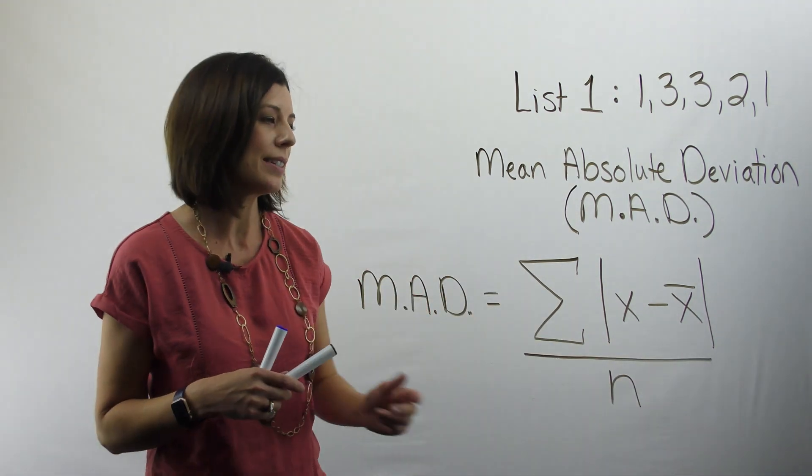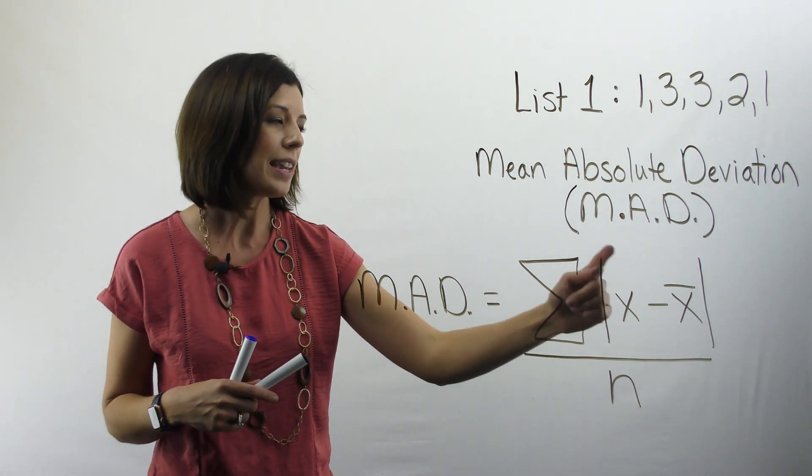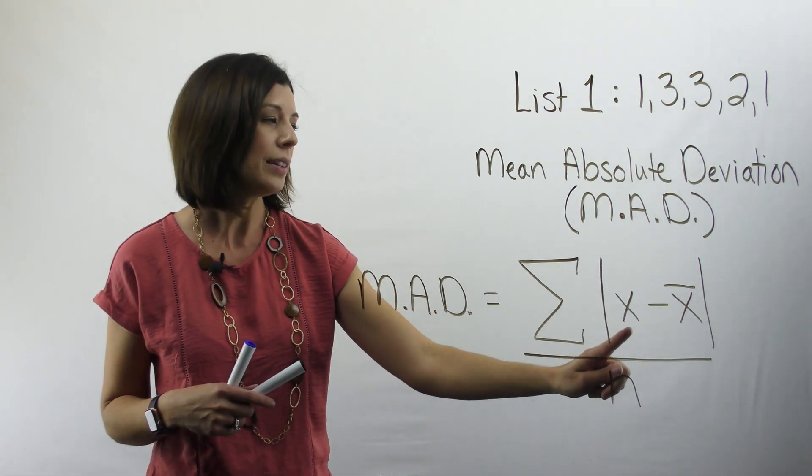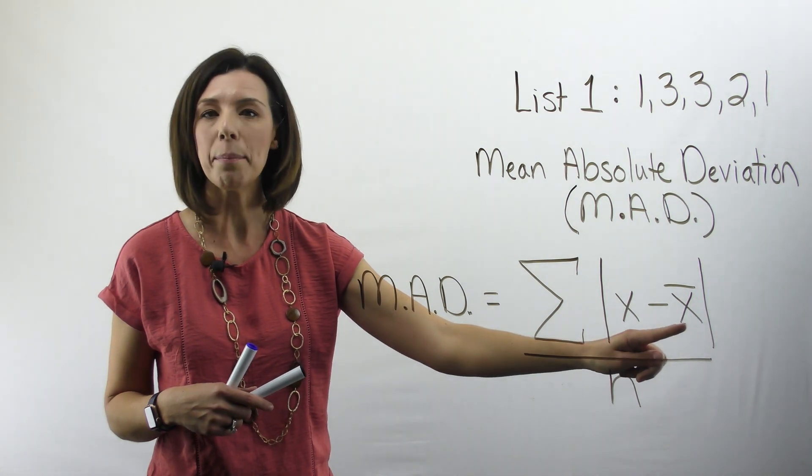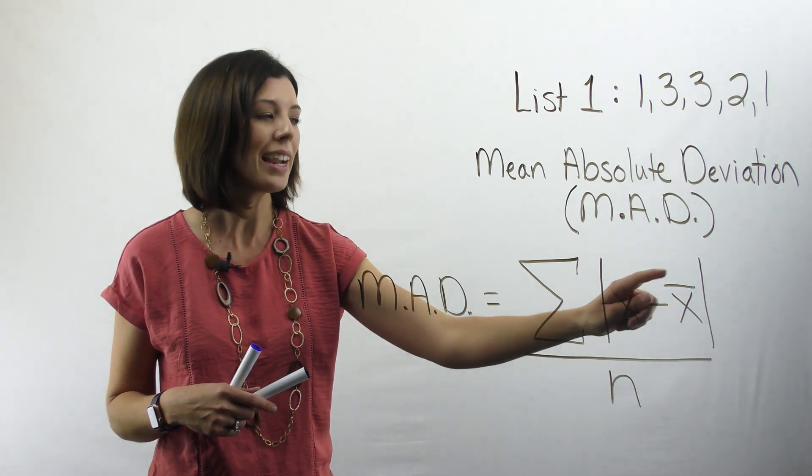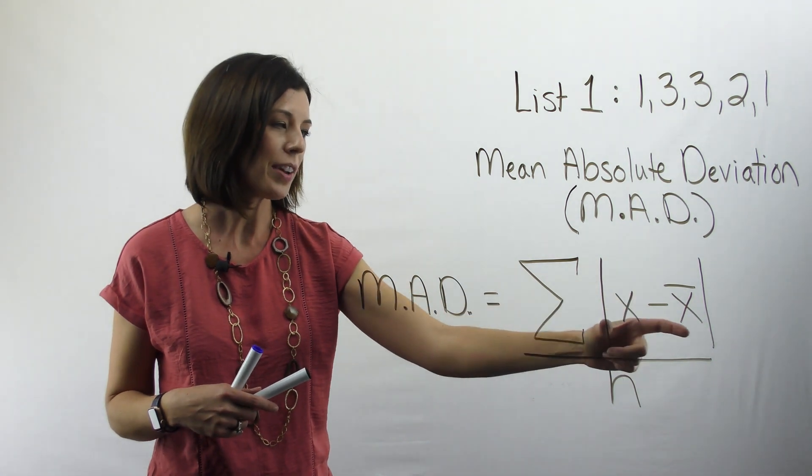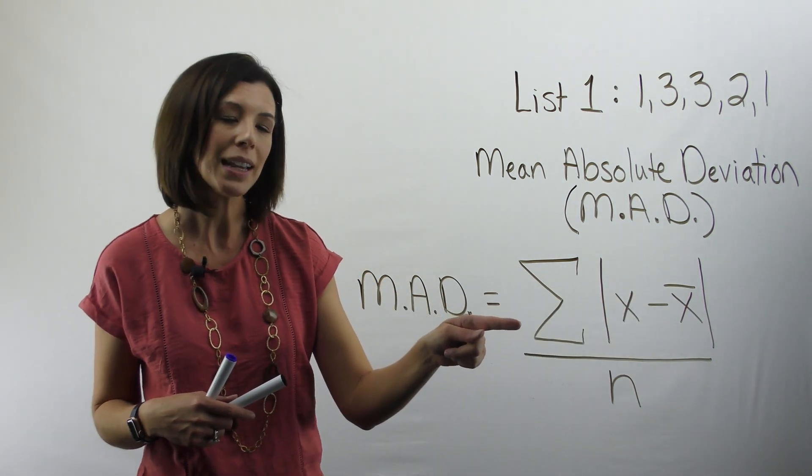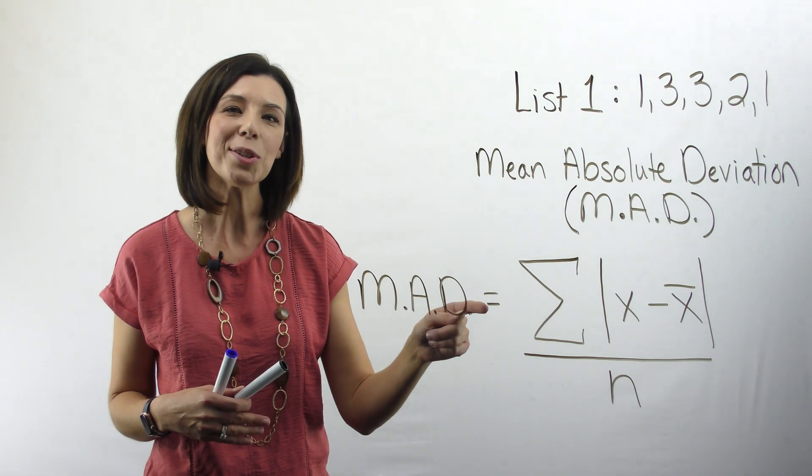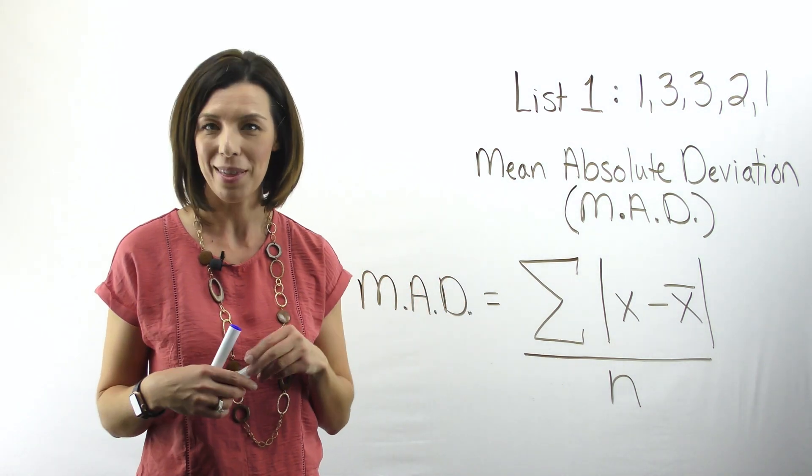What this tells me is I need to first start by taking the absolute value of each data point and subtracting out the sample mean. This is the symbol for sample mean in statistics. So I'm going to take the absolute value of that. Then I have this sigma here. The sigma tells me to add them all up or sum them all up.